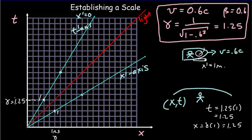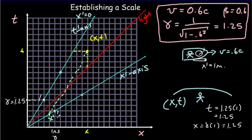Once we have the scale relationship, any point — called an event — can be read in both reference frames. In the Earth frame, we draw vertical and horizontal lines to read off x and t. In the moving frame, we draw a line parallel to the t-prime axis to get x-prime, and a line parallel to the x-prime axis to get t-prime. So every event has both (x, t) and (x-prime, t-prime) coordinates.